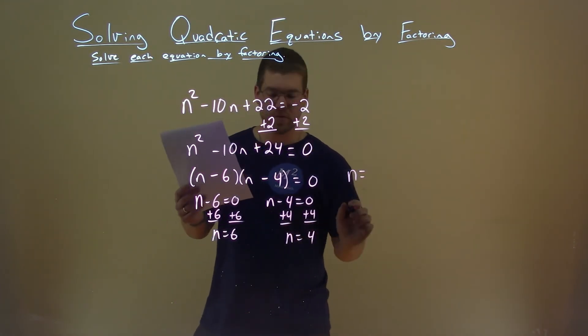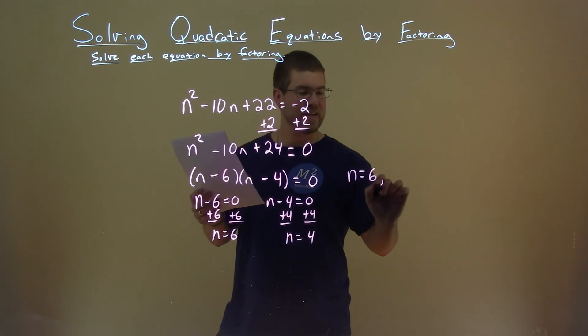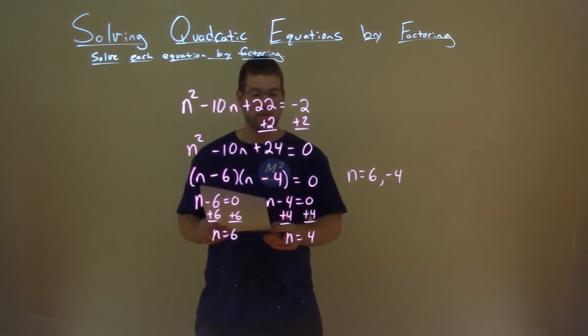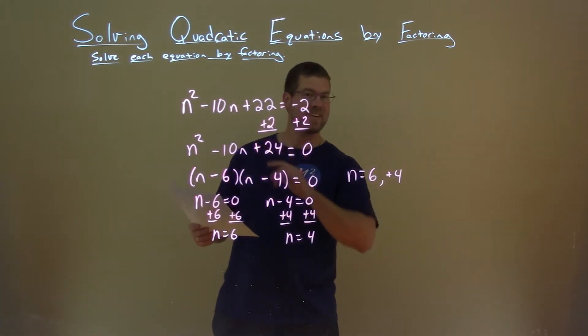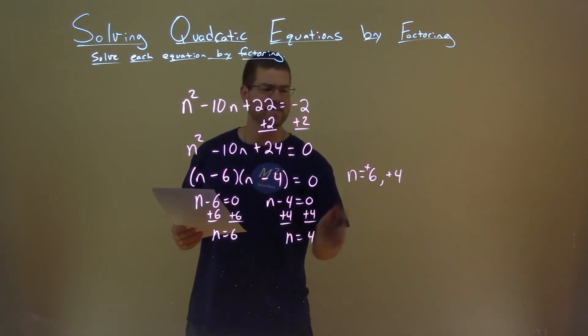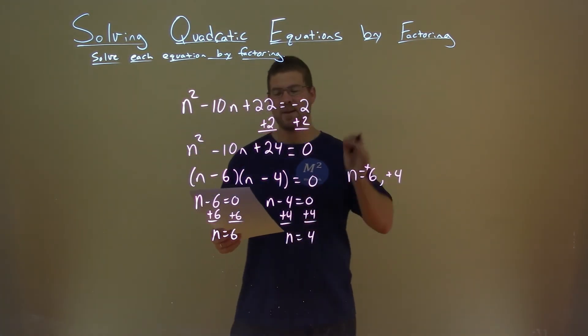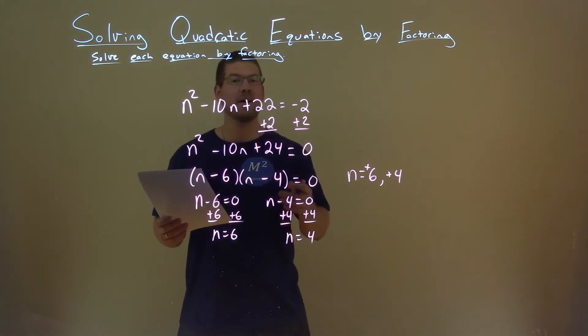And so my two solutions are just n equals 6 and a negative 4, and that is, oh sorry, positive 4. Oof, almost messed that up at the end. It's positive 4 and a positive 6. So n equals a positive 6 and a positive 4, and that is our final answer.